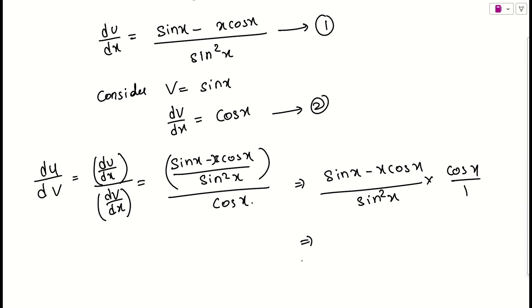So this is cos x by 1. If I take a reciprocal, this is simply 1 by cos x. So this will be 1 by cos x. So simply what I can do? I can actually rewrite it as sin x minus x cos x.